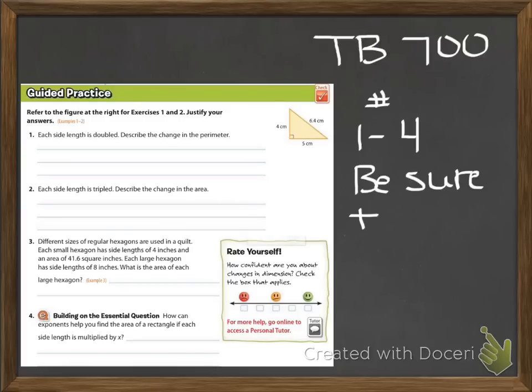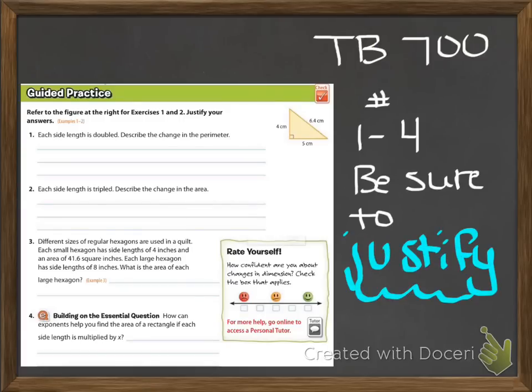On textbook page 700, go ahead and do numbers one through four. Be sure to justify your answer. This lesson was also taught in class, so you also have the independent practice page to complete. I will see you in class.